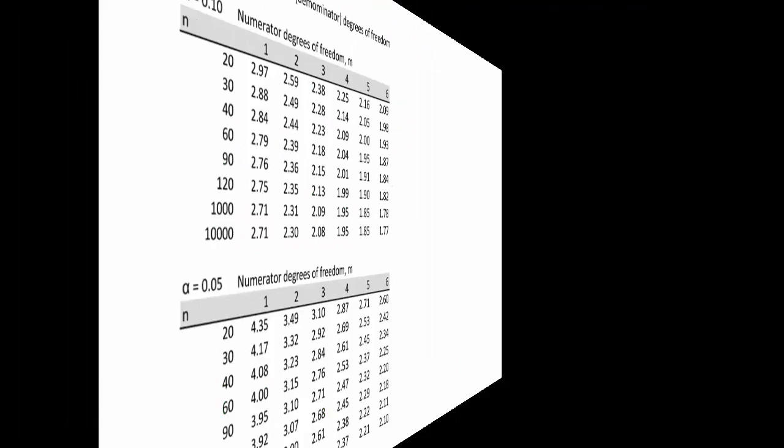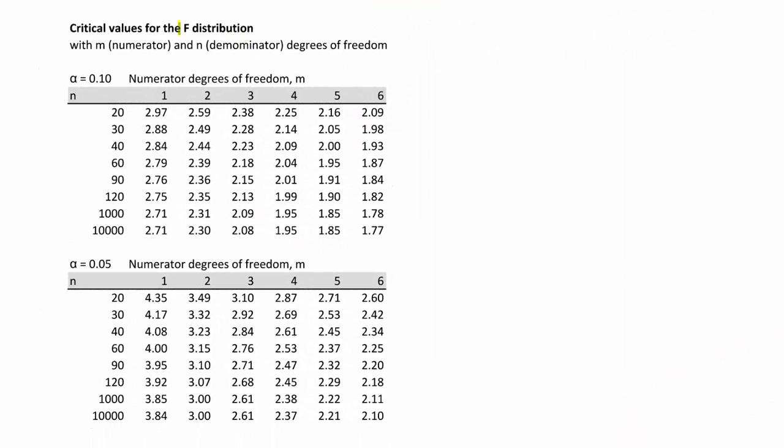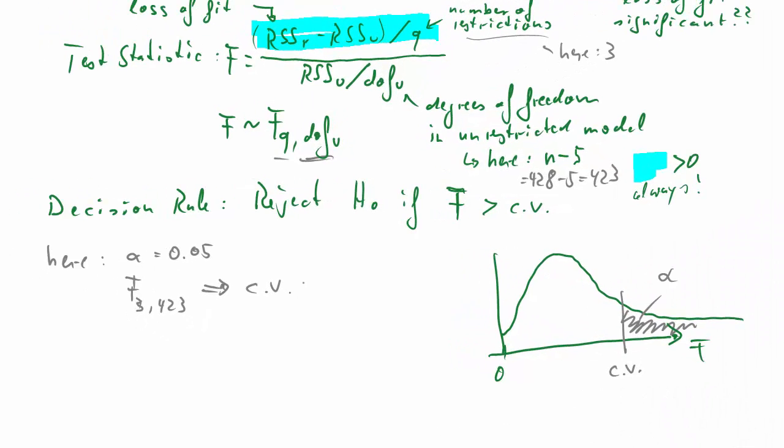So with that information, we can get the critical value. We'll go to an F-distribution table. We look at alpha of 5. Now there are two degrees of freedoms, the row and the columns. The M, or in our language, that was Q, that's the numerator degrees of freedom. The denominator, somewhere between 120 and 1,000. Let's use 1,000. You can use either 2.61. So that's our critical value, 2.61. So we shall reject the null hypothesis if our test statistic is larger than 2.61.